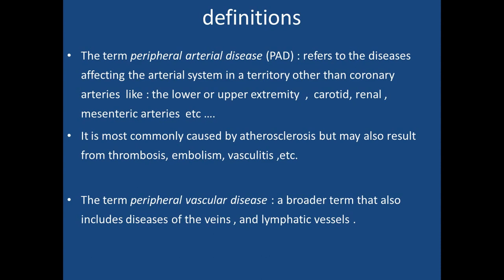Peripheral arterial disease is most commonly caused by atherosclerosis, but may result from thrombosis, embolism, vasculitis, traumatic injury, and aneurysmal degeneration, whatever the underlying pathology.